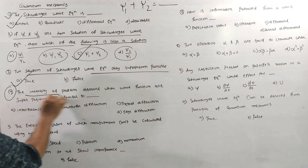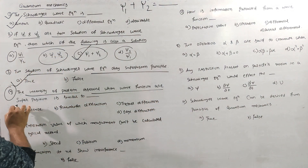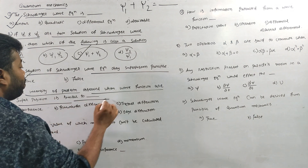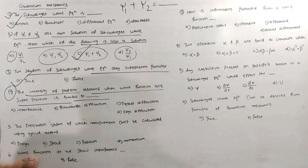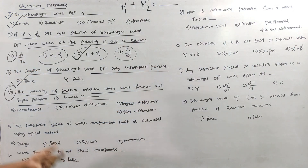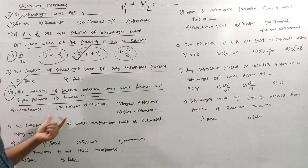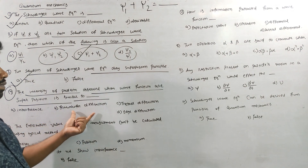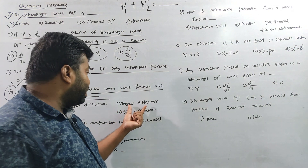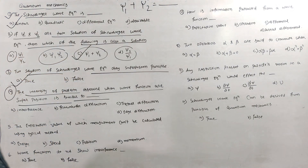Question number 4: The intensity pattern observed when wave functions are superposed is similar to which phenomenon? The options are: interference, Fraunhofer diffraction, Fresnel diffraction, or edge diffraction. The answer is Fraunhofer diffraction.